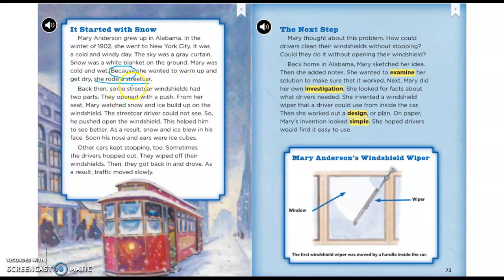Back then, some streetcar windshields had two parts that opened with a push. From her seat, Mary watched snow and ice build up on the windshield. The streetcar driver could not see, so he pushed open the windshield. So what did he do because he could not see? He pushed open the windshield—that helped him see better. The cause is he can't see; the effect is he pushed open the windshield.